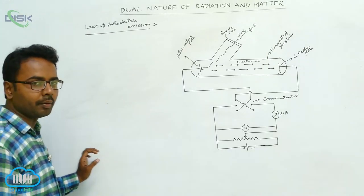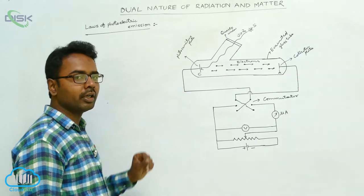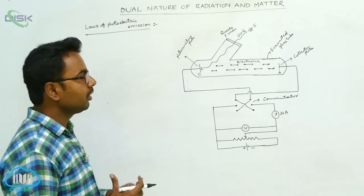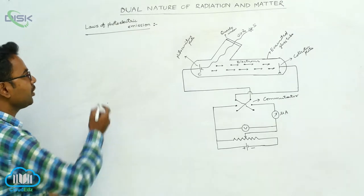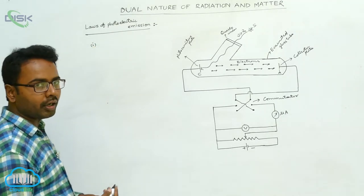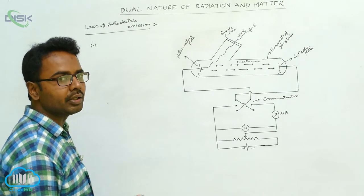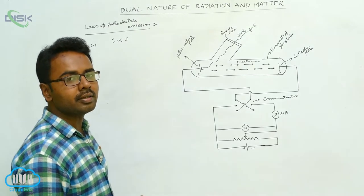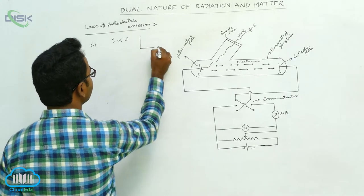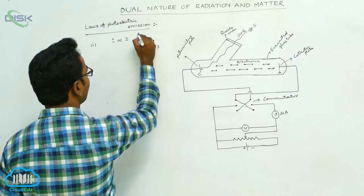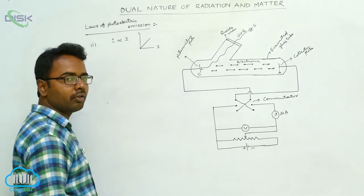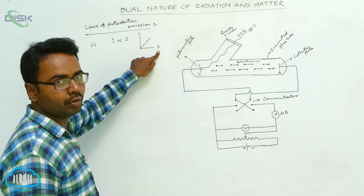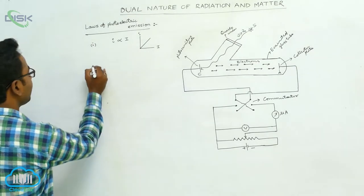Here we see the laws of photoelectric emission. From the experimental study of photoelectric emission, we summarize some points. The first one is that the photo current increases linearly with the intensity of incident radiation — the photo current i is directly proportional to the intensity I of the incident radiation. As we plot the graph between intensity and photo current, it is a straight line passing through the origin, making it clear that photo current increases linearly with intensity.